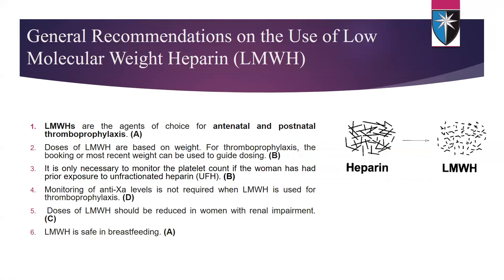Low molecular weight heparin is the agent of choice for antenatal and postnatal thromboprophylaxis. The dose is based on weight — very important. It is only necessary to monitor platelet count if the woman has had prior exposure to unfractionated heparin. Monitoring of anti-Xa level is not routinely required with low molecular weight heparin. The dose should be reduced in women with renal impairment — very important if you have a female with preeclampsia and impaired kidney function.